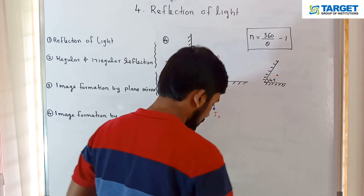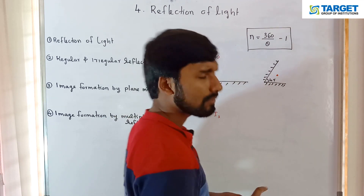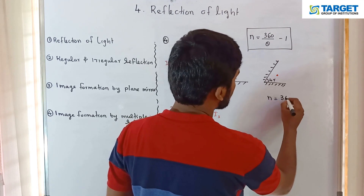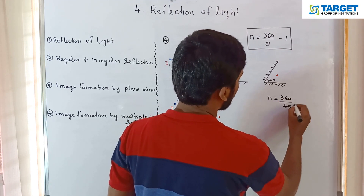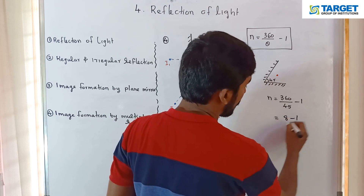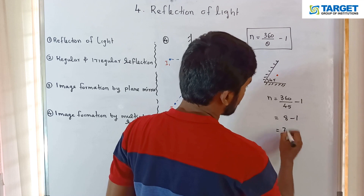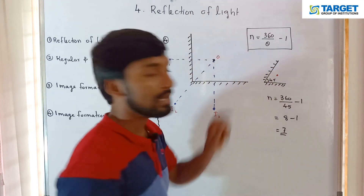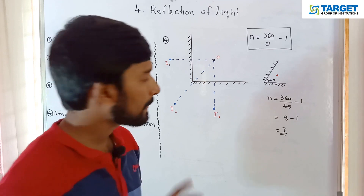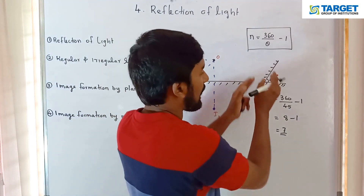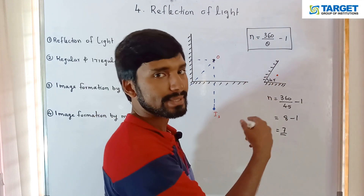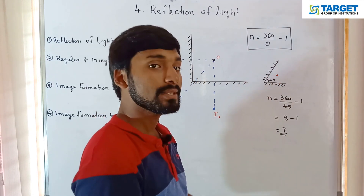For example, if the angle between the mirrors is 45 degrees: n = 360 divided by 45 minus 1 = 8 minus 1 = 7 images. If the angle between the mirrors is 60 degrees: n = 360 divided by 60 minus 1 = 6 minus 1 = 5 images.